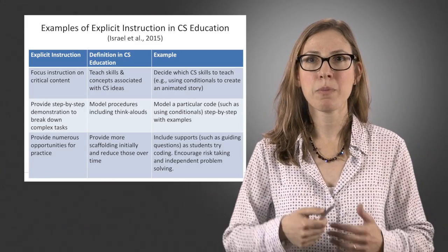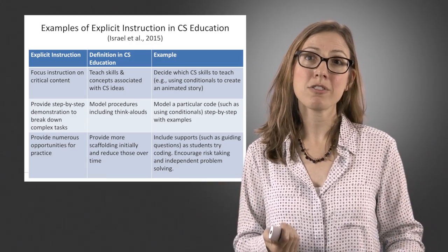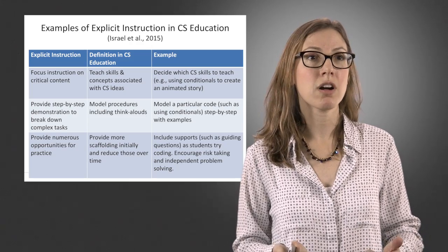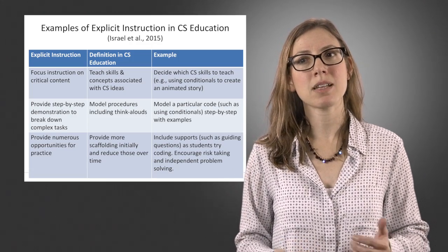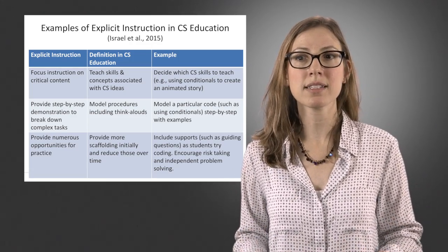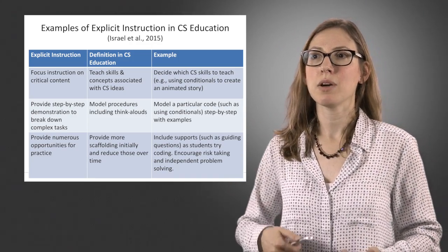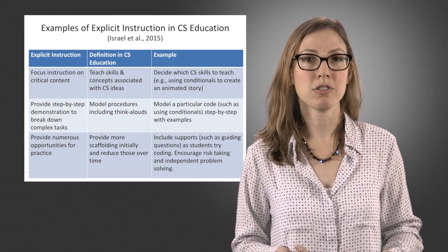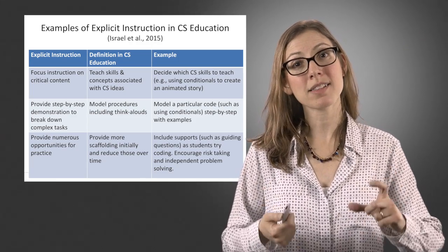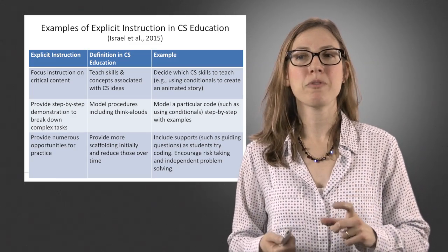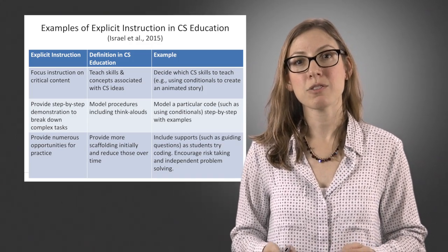Archer and Hughes in 2011 identified about 15 different explicit instruction processes — here are three: focusing instruction on critical content and being explicit about what we want to teach; providing step-by-step demonstrations of how to break down complex tasks; and having numerous opportunities for practice. In a computing environment, this might mean teaching students the skill of using conditionals, modeling how to use those blocks of computing code, and then providing guiding questions and supports that encourage risk-taking so students can be successful.